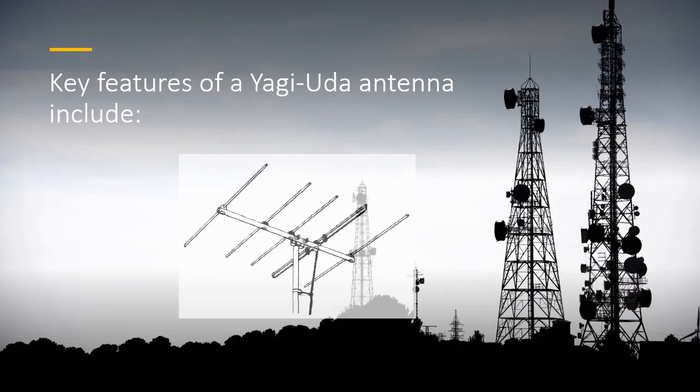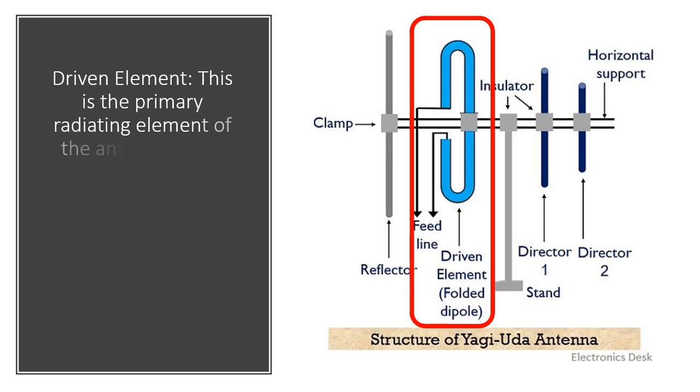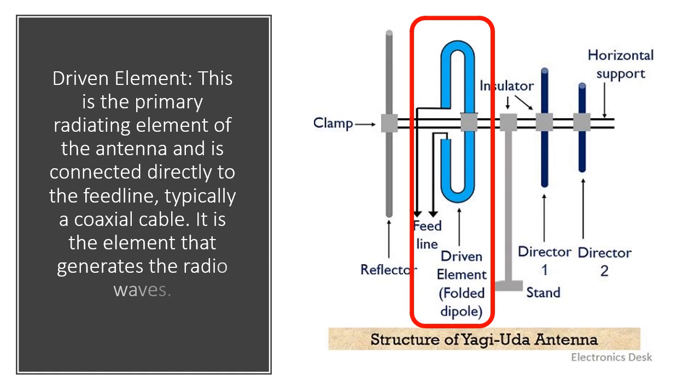Key features of a Yagi-Uda Antenna include the driven element. This is the primary radiating element of the antenna and is connected directly to the feed line, typically a coaxial cable. It is the element that generates the radio waves.